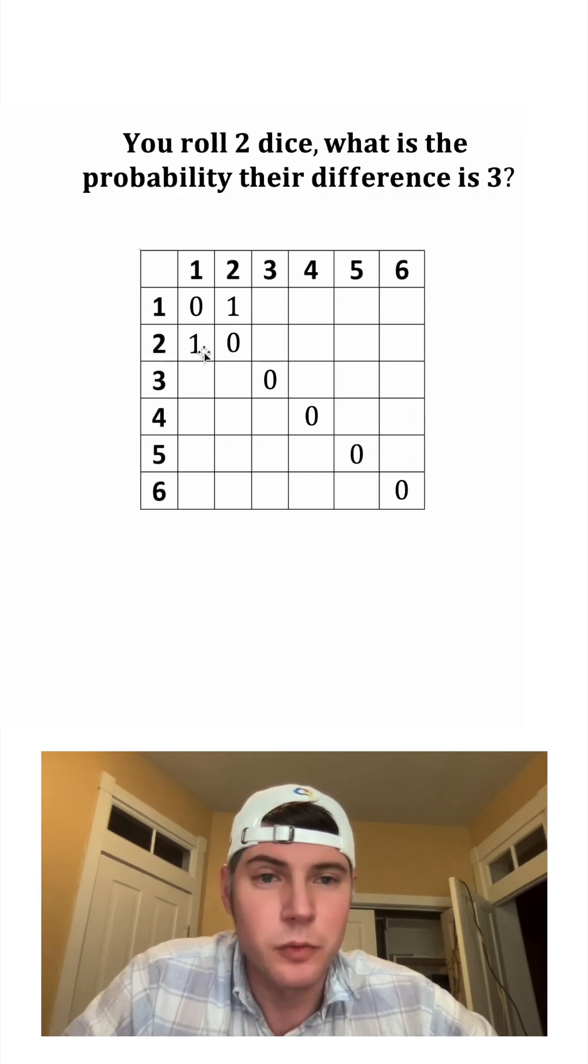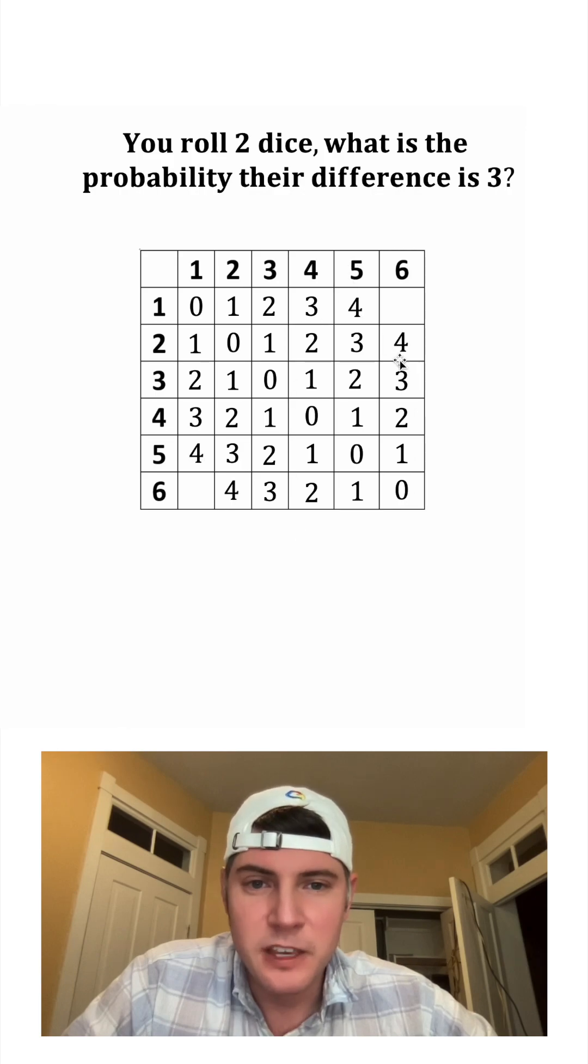And along these two diagonals they're all going to be ones. This pattern does continue. These will all be twos, these will all be threes, these will be fours, and these two will be fives. These are all the possible differences we can have.